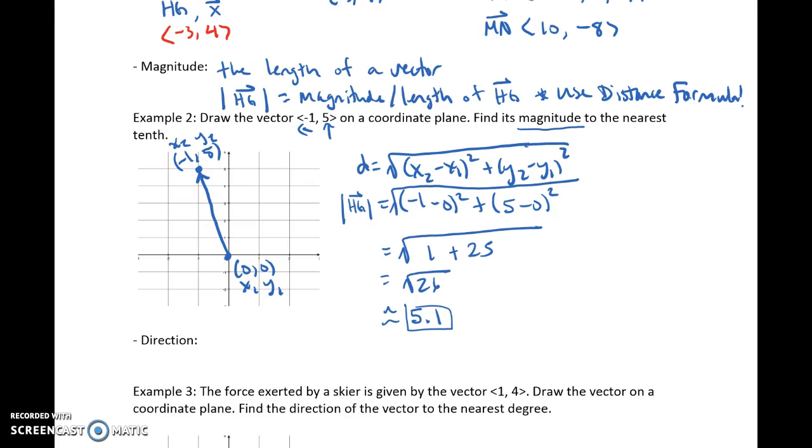Let's go ahead and check your work. Hopefully, you got square root 26, which is also approximately 5.1 rounded to the nearest tenth. So that's magnitude.